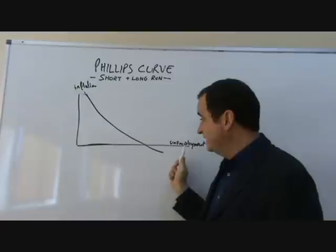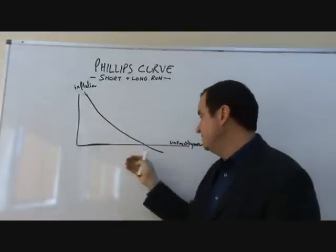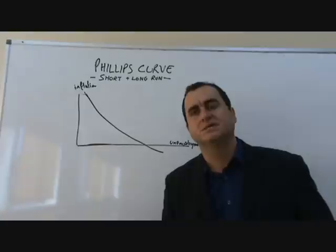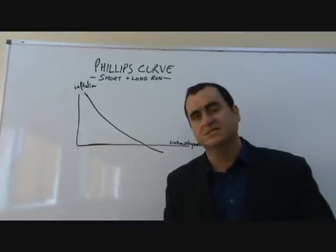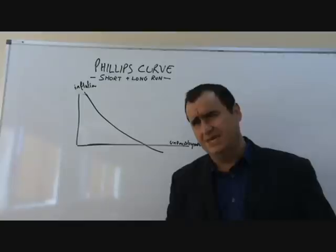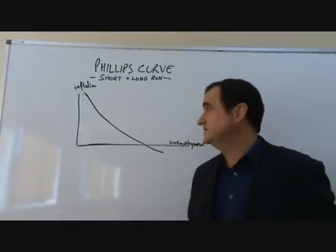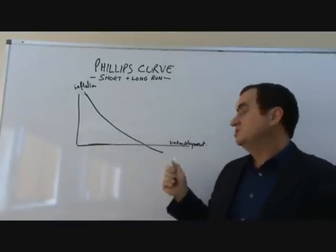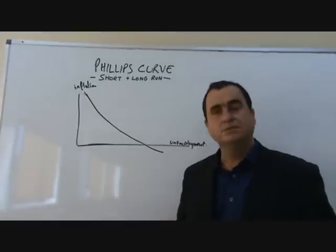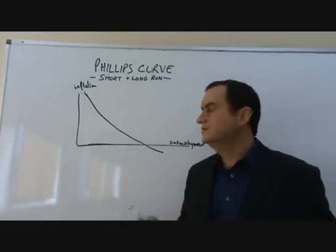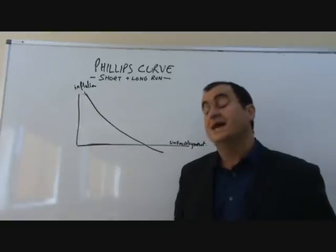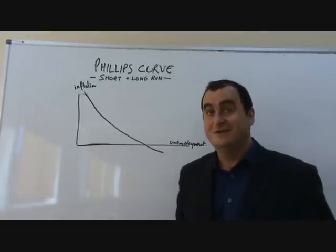When inflation is high, unemployment is low, and when inflation is low, unemployment is high. This was very bad news for policymakers in the 1950s and 60s, because it implied that two key macroeconomic objectives - achieving low inflation and achieving low unemployment - were mutually exclusive. They couldn't achieve both; they'd have to choose one and accept that the other would fail.